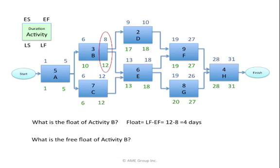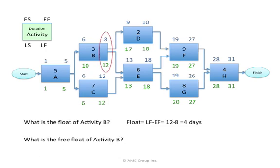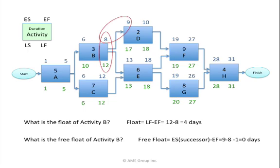Another question: what is the free float of activity B? Free float is how much an activity can slip from its early finish before it affects the earliest start of any successor. The free float of activity B is how much B may slip from its early finish of day 8 before it would affect the earliest start of activity D at day 9. The equation: 9 minus 8 minus 1 equals 0. This means if B slips at all, it will start to eat into D's float.